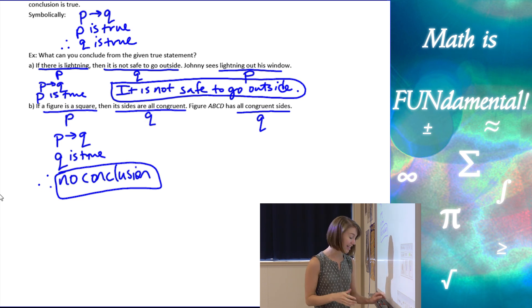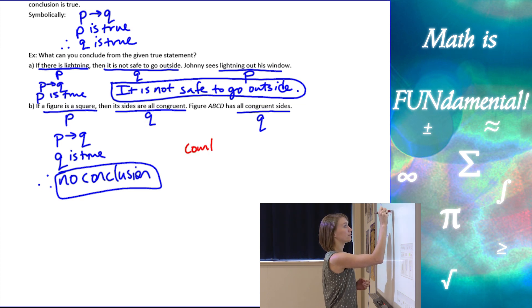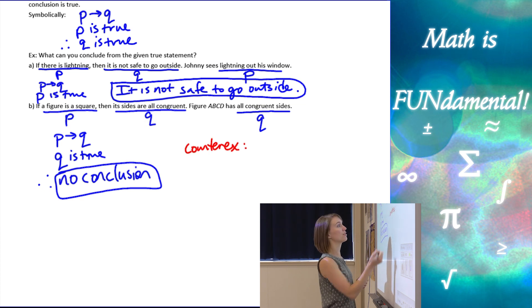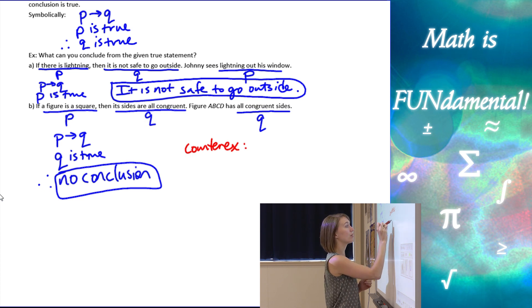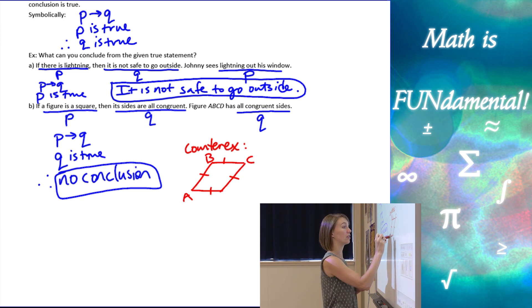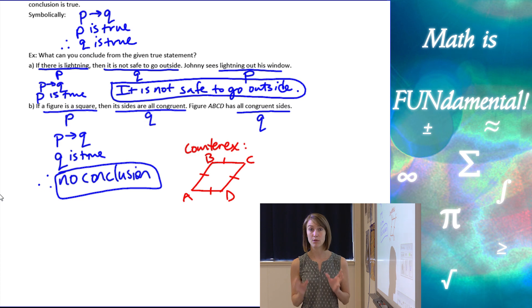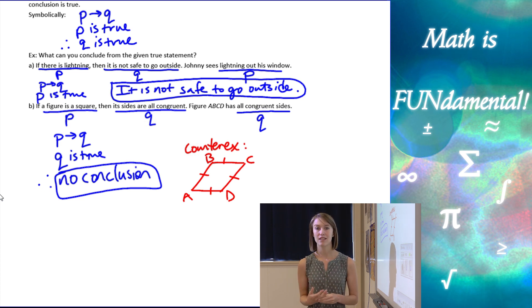Let me give you a counterexample for why we can't conclude that ABCD is a square. If I have ABCD with all congruent sides, it doesn't have to be a square — it could be what we call a rhombus. So just because the conclusion that it has all congruent sides was true, it doesn't mean that it has to be a square. Be really careful, and make sure the ordering goes exactly as the law of detachment states.